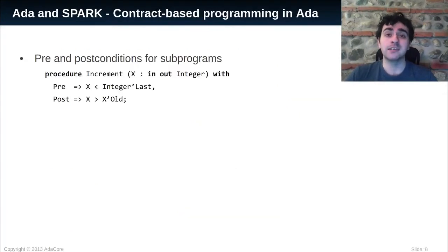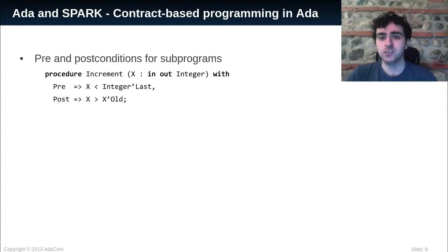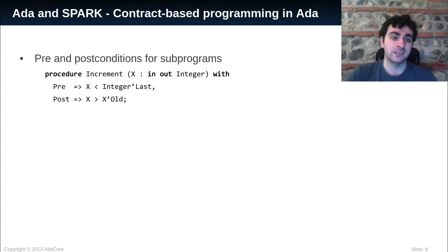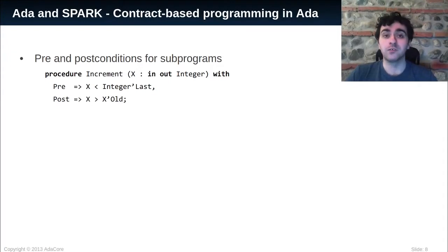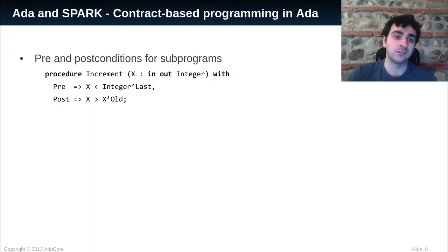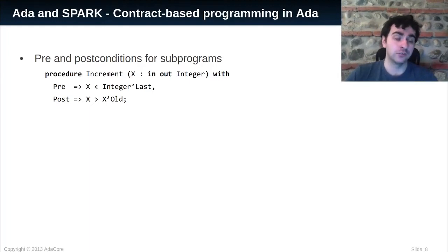Contract-based programming is another feature of Ada. We can add contracts, for example, pre- and post-conditions for subprograms. Subprograms are either functions, which return values, or procedures, which work on side effects. In the example, increment is a procedure taking x as a parameter. The mode of x is in-out, which means that increment will be able to read and write to x in its body. We can also add pre- and post-conditions on increment, which are made of boolean expressions.